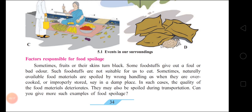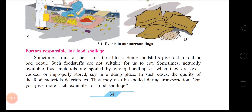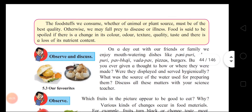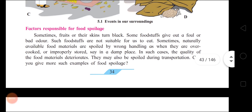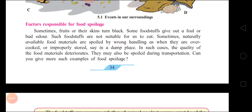Factors responsible for food spoilage. First, natural causes: the foodstuff may spoil due to natural causes. All foodstuffs have their own shelf life. Fruits or their skin turn black and may give out a bad odor. Second, man-made causes: wrong handling, overcooking, or improper storage like storing in a damp place, or problems during transportation, result in food spoilage.